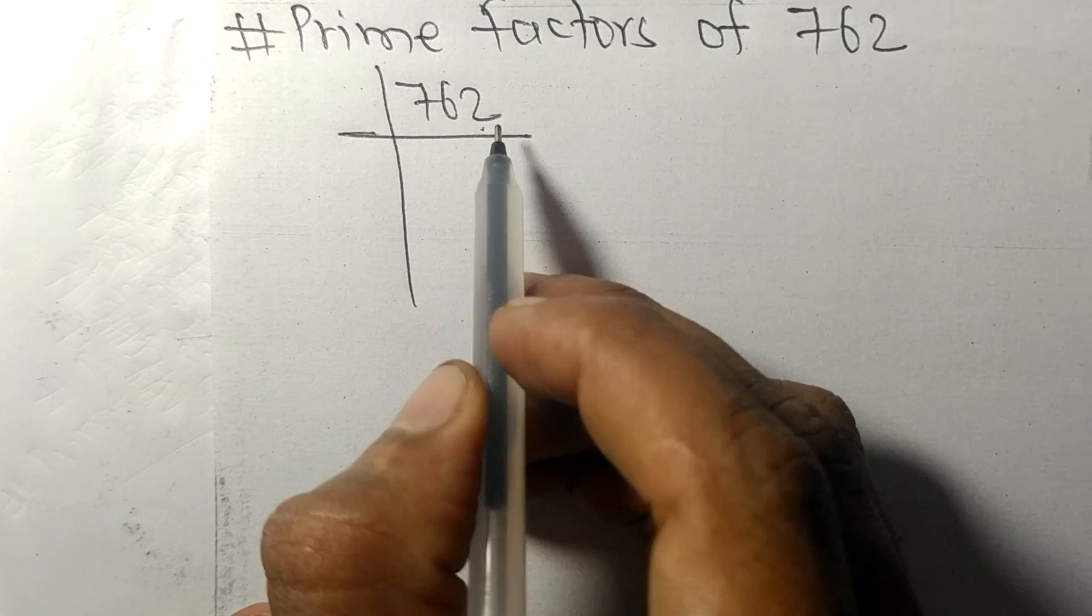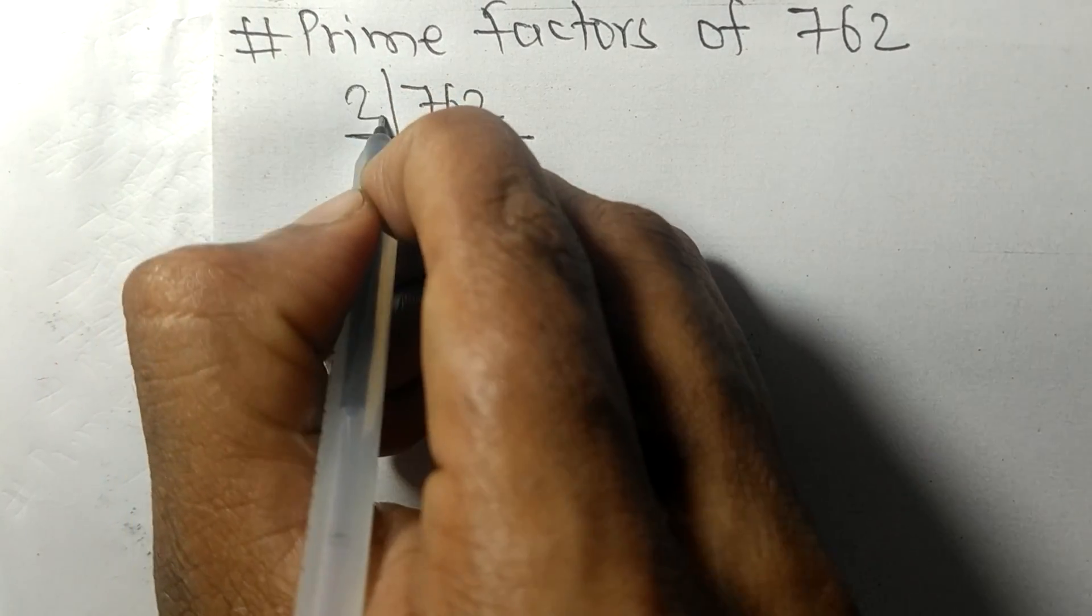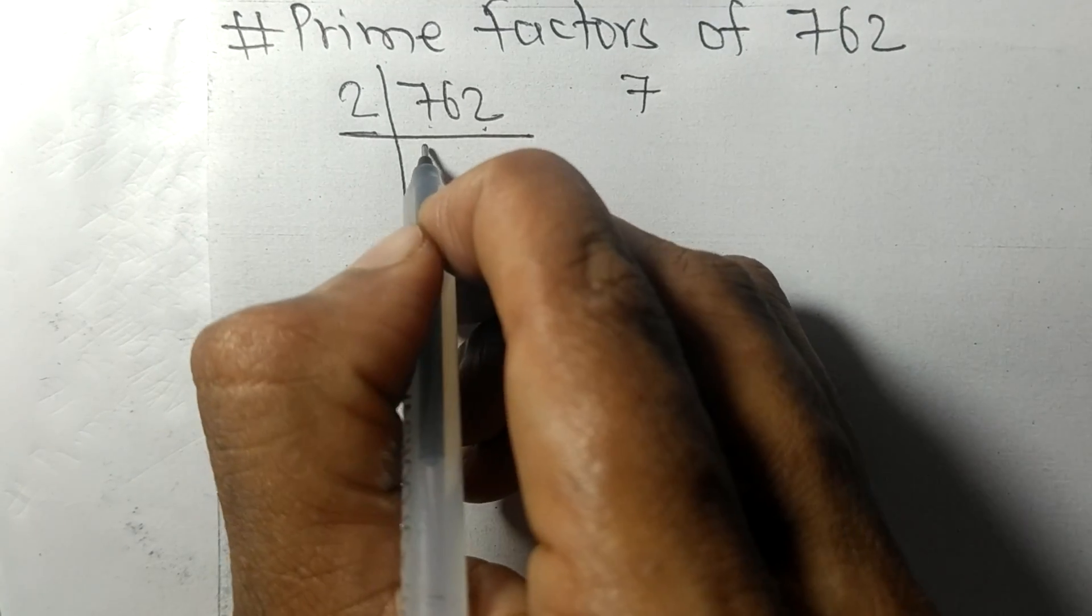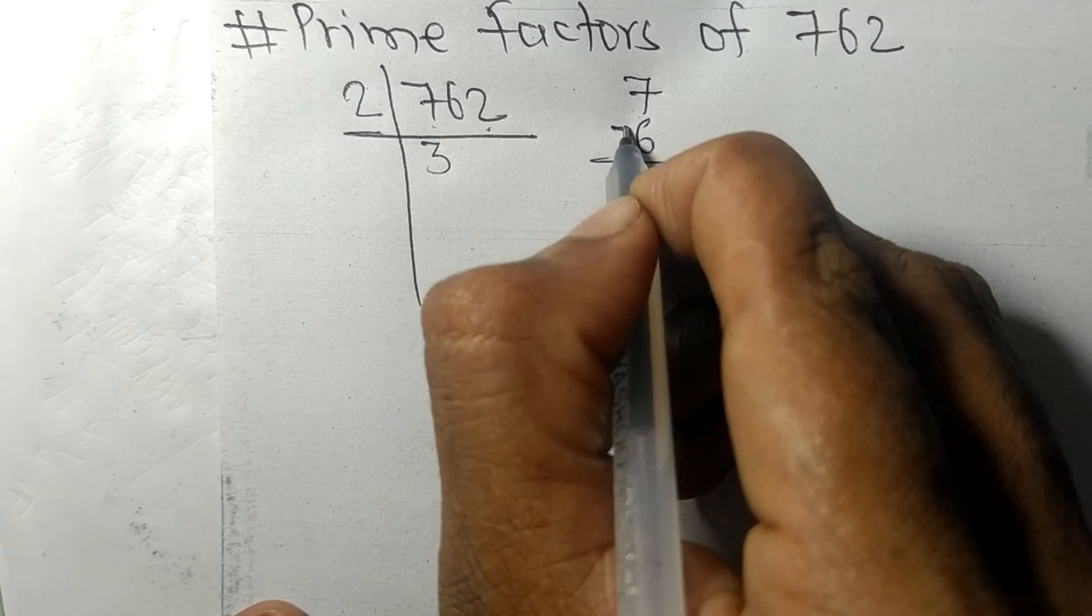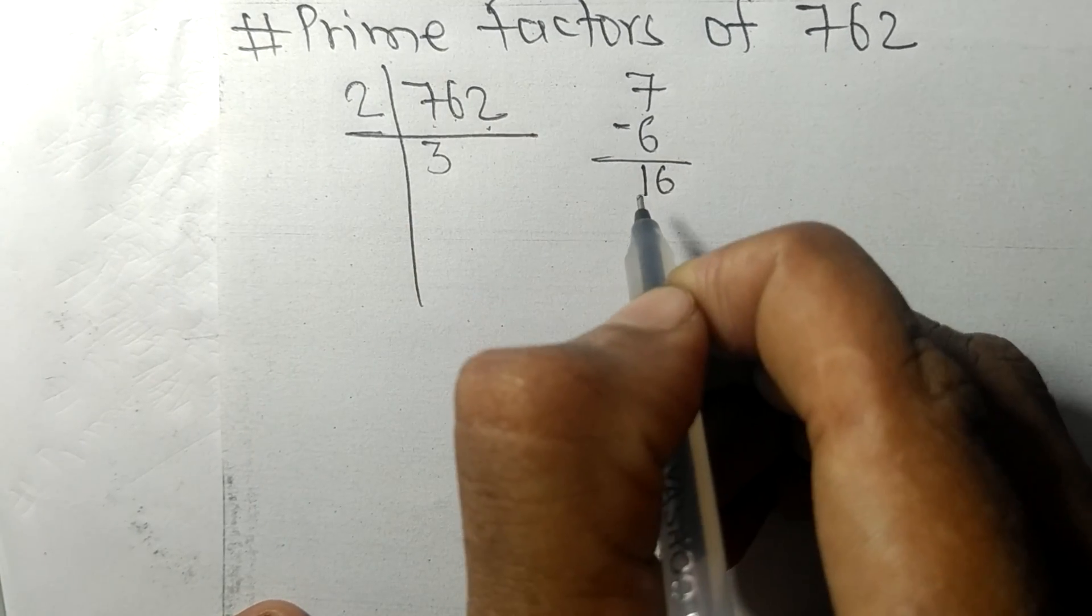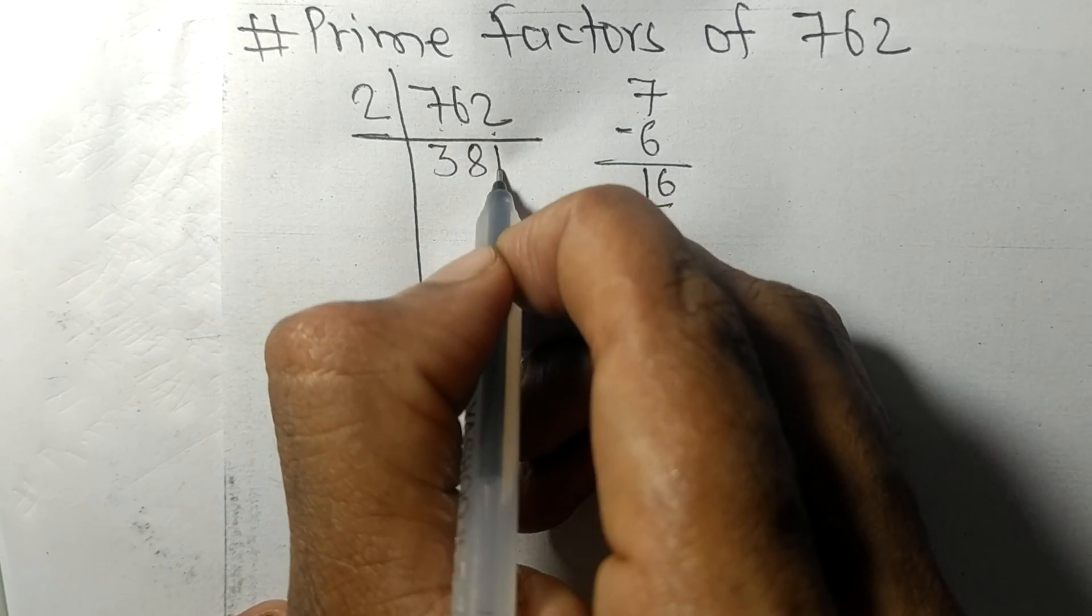It contains an even number, so these whole numbers are divisible by 2. First we have 7, so 2 times 3 means 6, and subtracting we get 1. And this 6, 16, so 2 times 8 means 16, and 2 times 1 means 2.